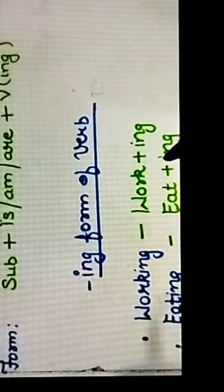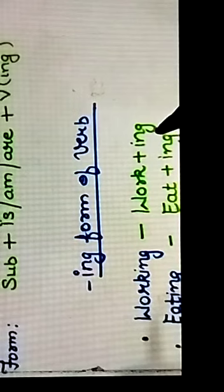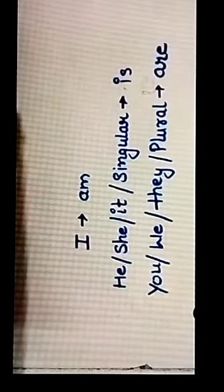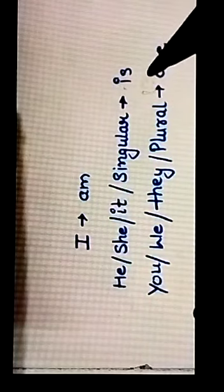So many verbs are possible. So the main important thing in present continuous tense is ing form because it represents that the actions are actually going on at the time of speaking. Now let us see.